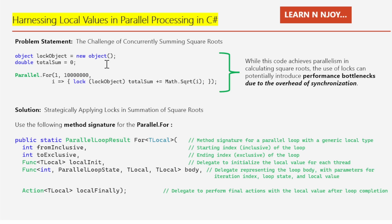The Parallel.For method iterates from 1 to 1 million. For each iteration it calculates the square root of the current number i and adds it to total sum using the statement: total sum += Math.Sqrt(i). The lock object is a synchronization mechanism ensuring that only one thread can access the total sum variable at a time, which is critical to prevent race conditions where multiple threads might try to update total sum simultaneously.